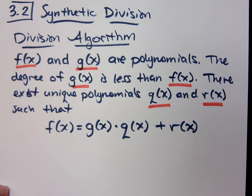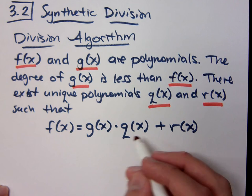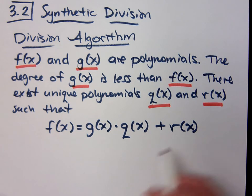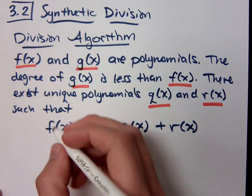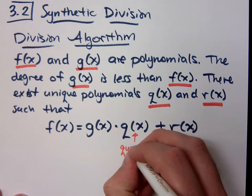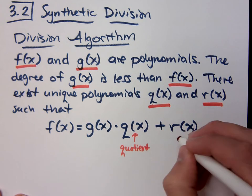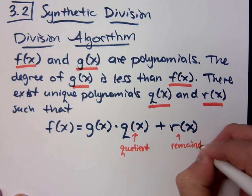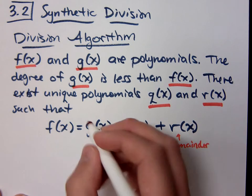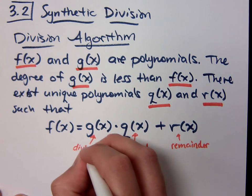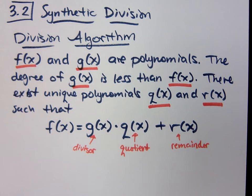The way we write that is like this: your number equals your quotient times what you were dividing by, plus your remainder. So let me clear this up. This right here is your quotient, that's your answer to a division problem. Your r is the remainder that you have. And this g(x), that's your divisor, like your denominator.